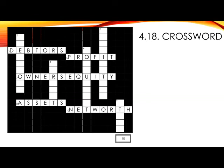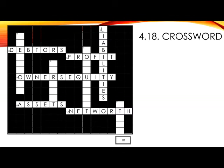Down number one: money owed to someone else is known as your liabilities. Number two: suppliers from whom you have bought goods on credit are your creditors.